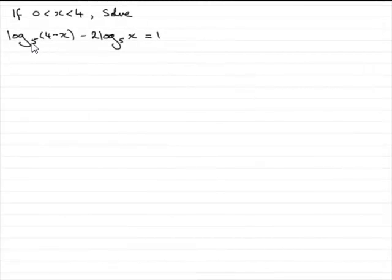Now, in this question then, we're told that if x lies between 0 and 4, we've got to solve the log of 4 minus x in base 5 minus twice the log of x in base 5 equals 1.